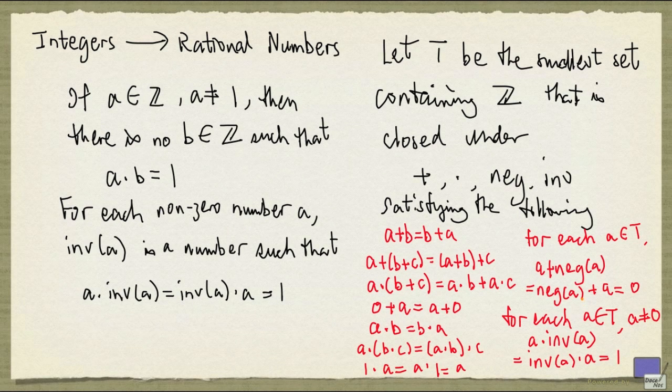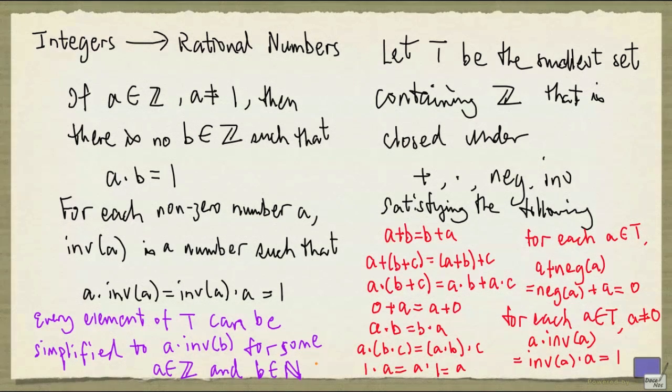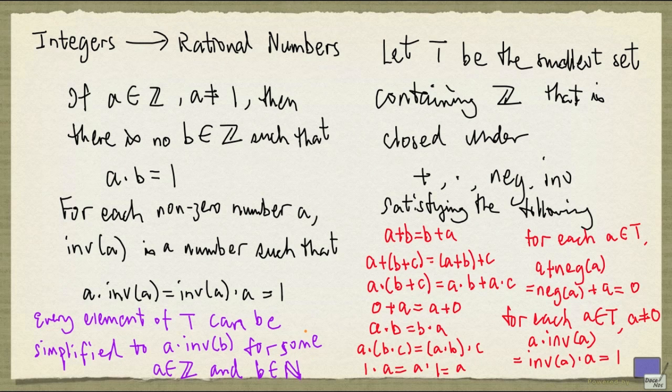With these rules, one can now show that every element of T can be simplified to a times inverse of b, for some integer a and natural number b. And this gives rise to a familiar fraction a over b.